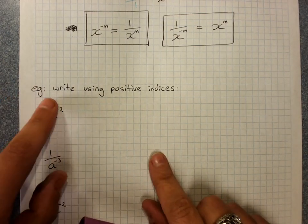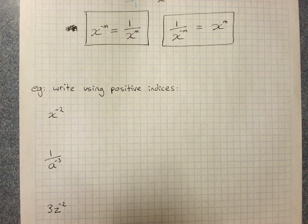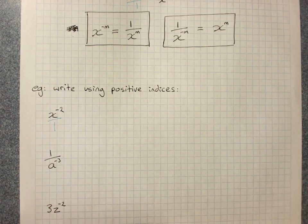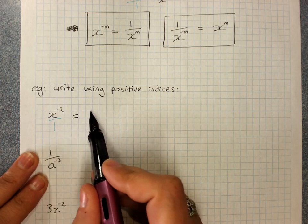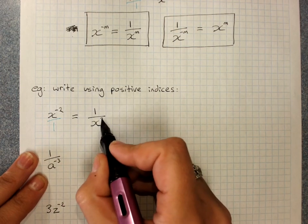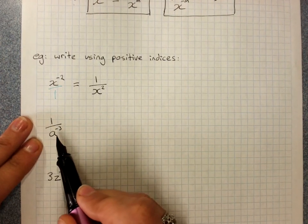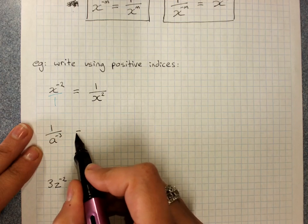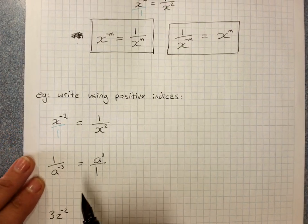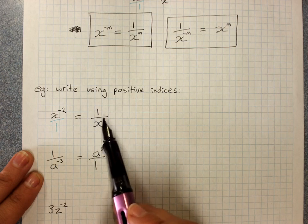The type of question you'll often get asked is to write using positive indices. x to the negative 2—we know that one. If it helps, we remember that this is over 1. I have a negative power. 1 over a to the negative 3: flip the fraction and change the power to a positive. x to the negative 2 is the same as 1 divided by x to the 2, or x squared.